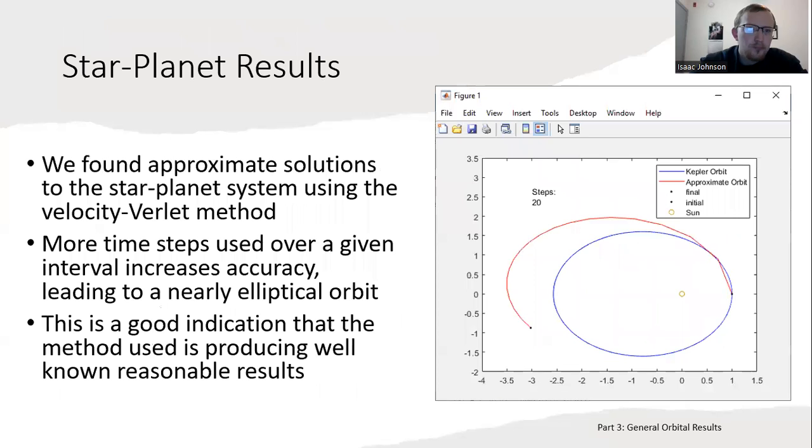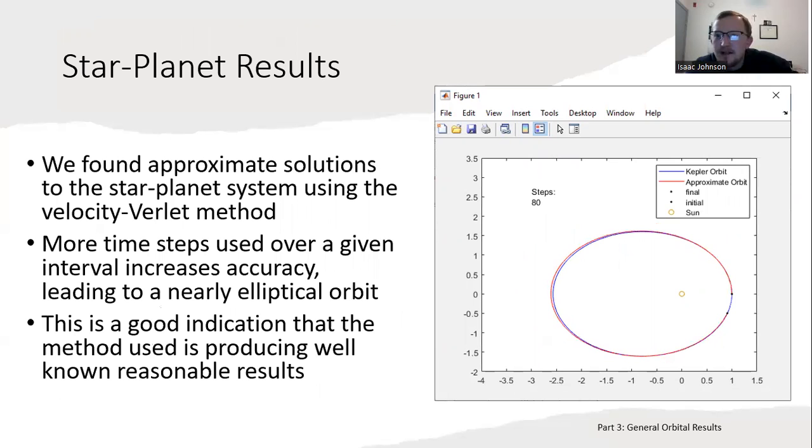Using the velocity Verlet method for the star-planet system yielded this result to the right. This was with only 20 steps, which is not nearly enough as we can tell—the blue orbit is Kepler's orbit, which is the true orbit. We'll pump it up to 40 steps, it's getting better. 80 steps, 160 steps, 320 steps—we're almost there. 30,000 steps looks pretty good. This led us to a nearly elliptical orbit, which is a good indication that the method we're using is producing well-known reasonable results.